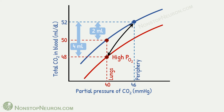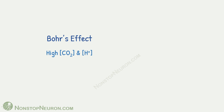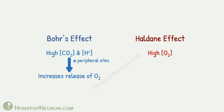If we see the entire picture, blood keeps shifting between these two points during carbon dioxide transport. Lower partial pressure of oxygen at peripheral sites helps load more carbon dioxide in blood, and higher partial pressure of oxygen at lungs helps release more carbon dioxide. Did this discussion ring any bells — something like Bohr's effect? Bohr's effect applies to transport of oxygen: higher concentration of carbon dioxide and hydrogen ions at peripheral sites increases release of oxygen. In the Haldane effect, higher partial pressure of oxygen at lungs increases release of carbon dioxide. Thus, both effects are opposite sides of the same coin.